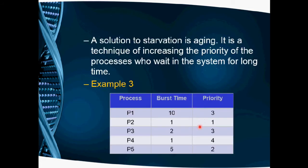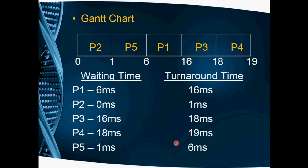P4 is the lowest priority process, with priority number 4. P4 has a burst time of 1 millisecond. Starting at 18, P4 executes from 18 to 19 milliseconds. This completes the Gantt chart for priority scheduling.